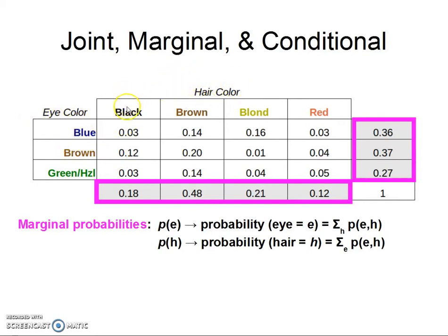Well, the black-haired people who have blue eyes, the black-haired people who have brown eyes, and the black-haired people who have green or hazel eyes—when you add all those up, that's everybody who has black hair, right? So 3% + 12% + 3% gives us 18% of people in our population who have black hair.